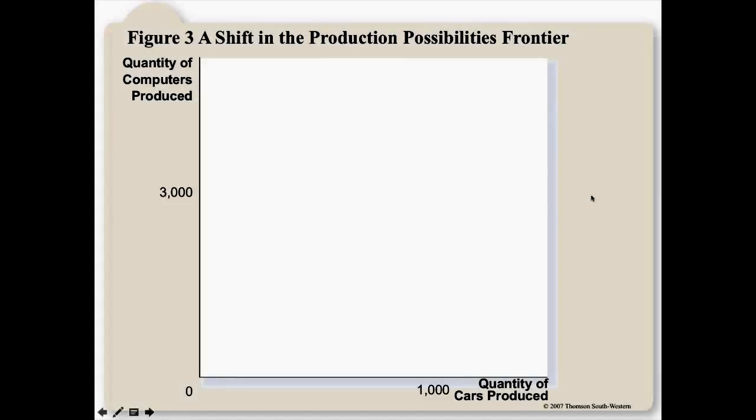Now, the production possibilities frontier is not static. It can grow. So, if we have an increase in land, labor, or capital, the factors of production, we're going to be able to produce more goods and services. So, the entire curve is going to shift outward.